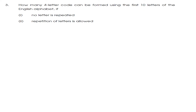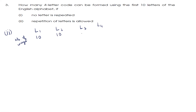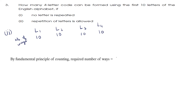Second subdivision — when repetition of letters is allowed. The 4-letter code consists of letters L1, L2, L3 and L4. Since repetition is allowed, each of the 4 letters can be formed using all 10 letters. So by the Fundamental Principle of Multiplication, the required number of ways is 10 into 10 into 10 into 10, which is 10 raised to 4, equal to 10,000 ways.